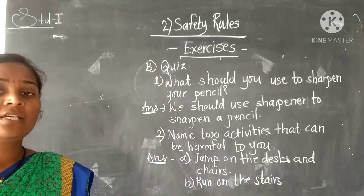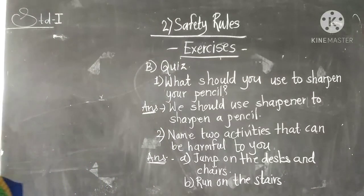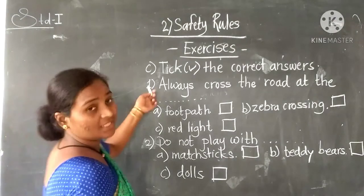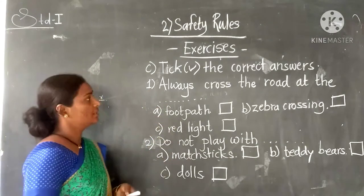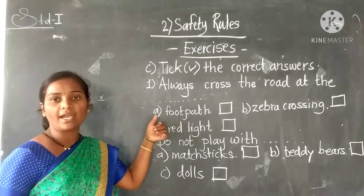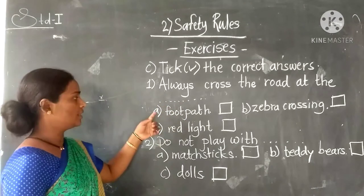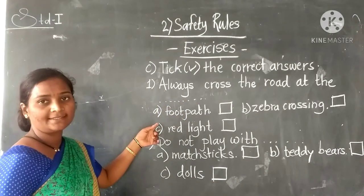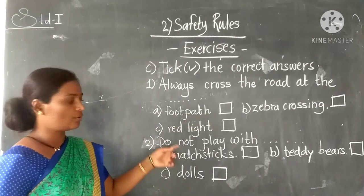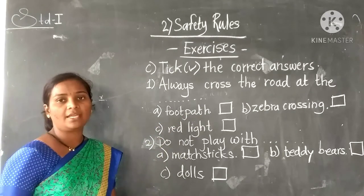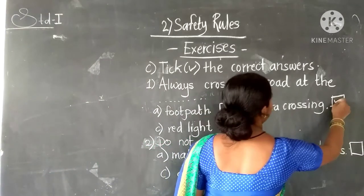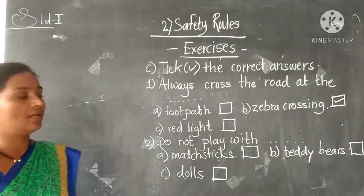Now Section C: pick the correct answers. First: always cross the road at the blank. You have options — A: footpath, B: zebra crossing, C: ramp. The answer is we should cross the road at the zebra crossing, so tick option B.